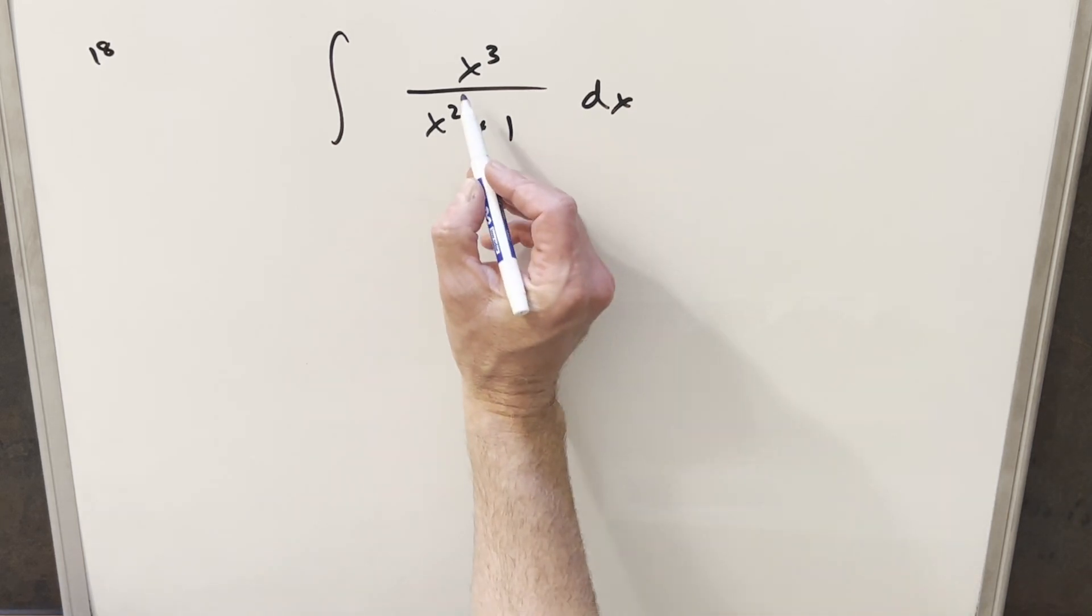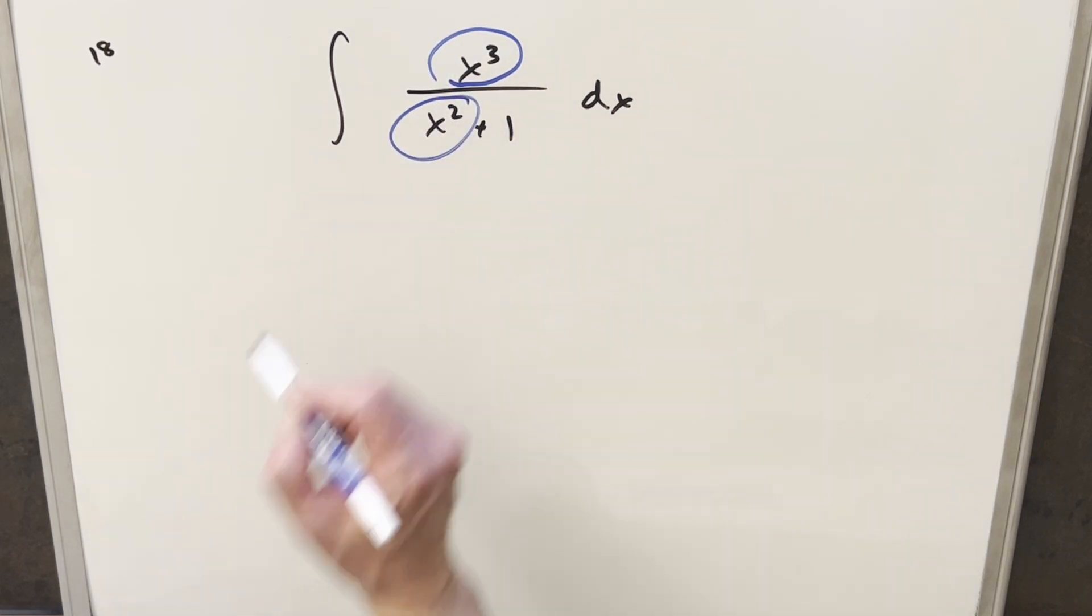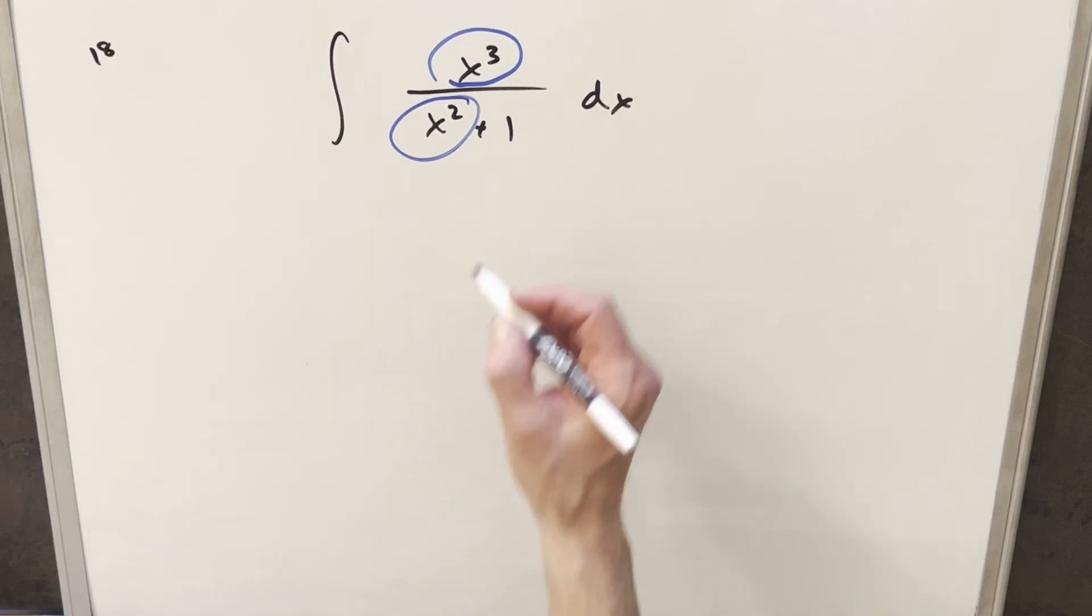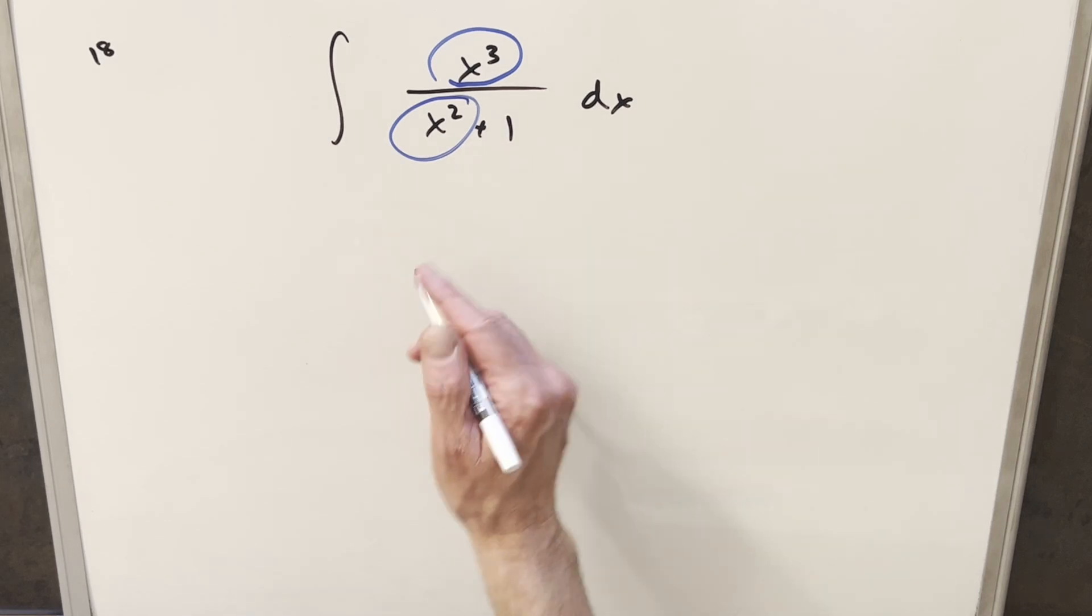Okay, the first thing that jumps out to me is this case where we have higher degree in the numerator than in the denominator. And so this is the case where we could do polynomial division, but I always avoid it, so let's just avoid it again. And so what we can do here, I want to manipulate the numerator so I can divide the denominator into it.